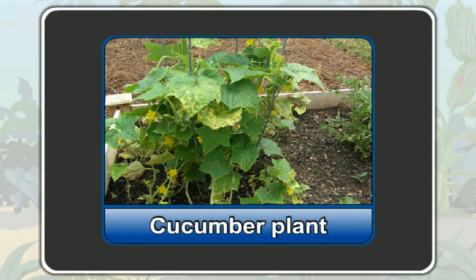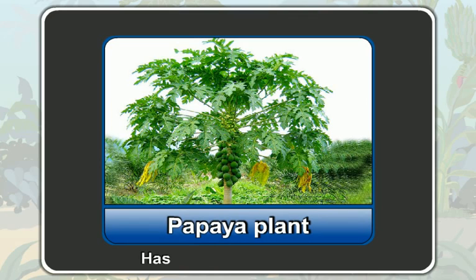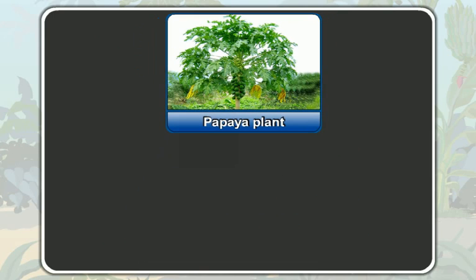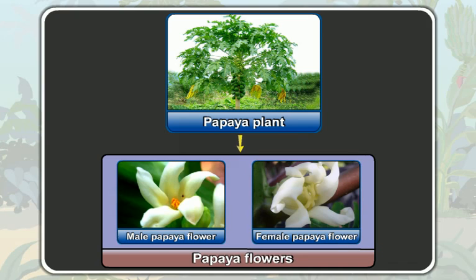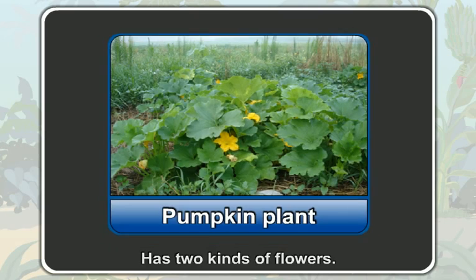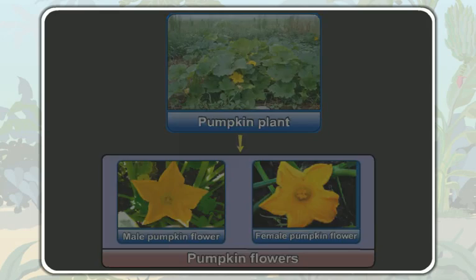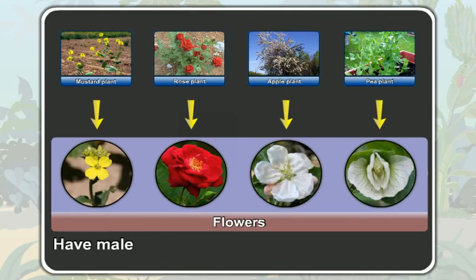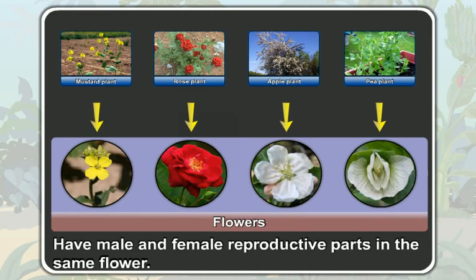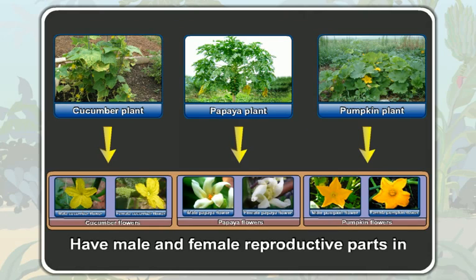So, a cucumber plant has two kinds of flowers: male cucumber flower and female cucumber flower. Similarly, a papaya plant also has two kinds of flowers: male papaya flower and female papaya flower. So, some covered seeded plants have male and female reproductive parts in the same flower, and some have them in different flowers.